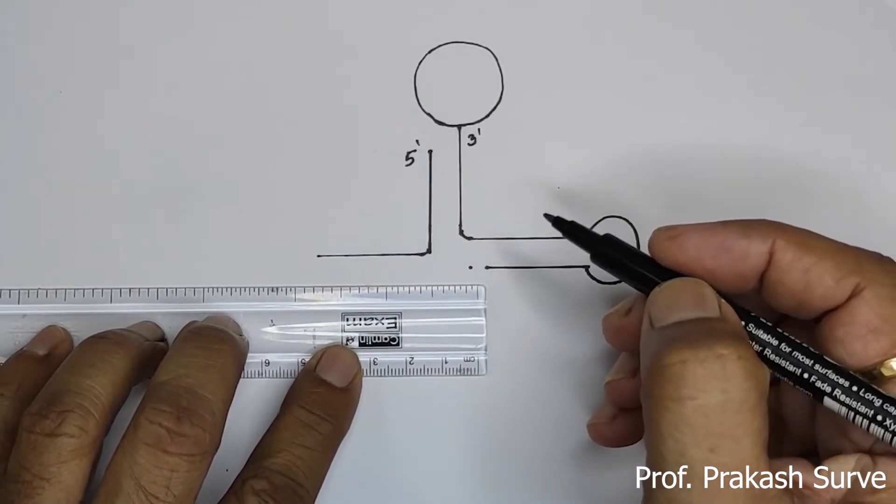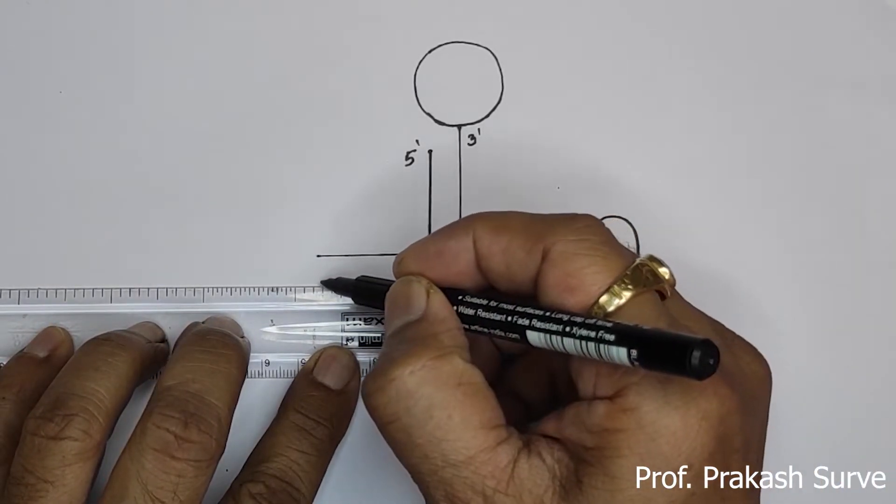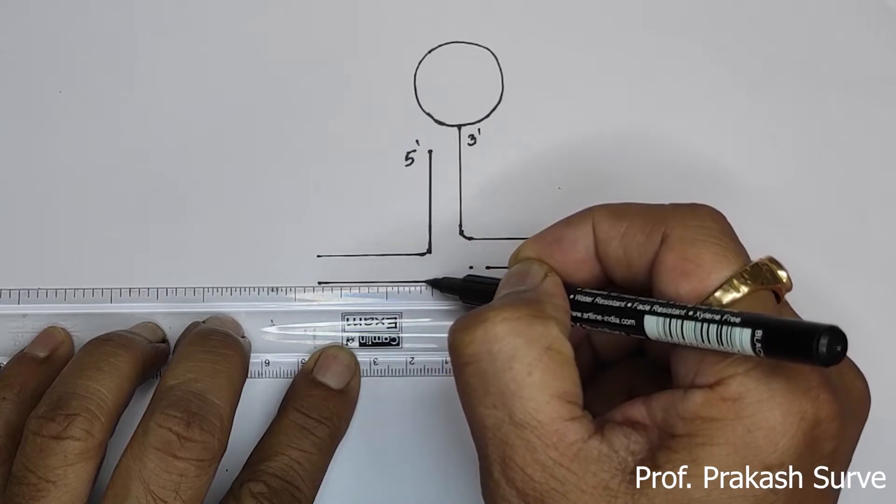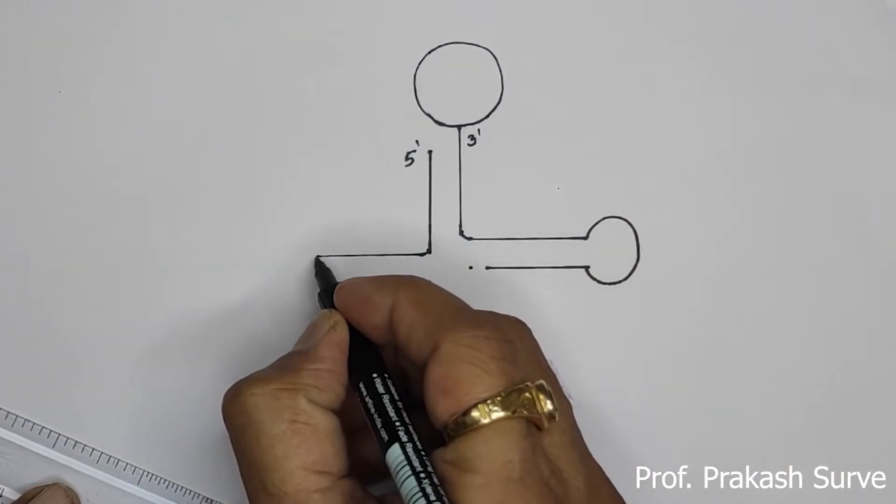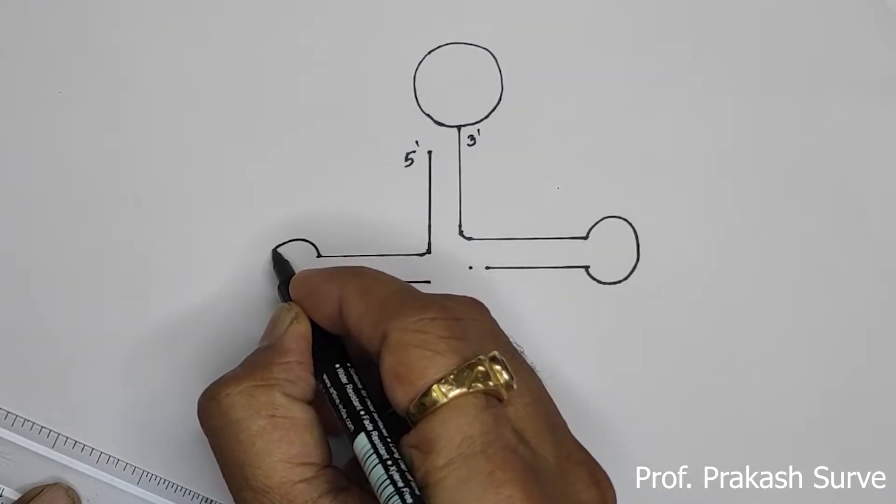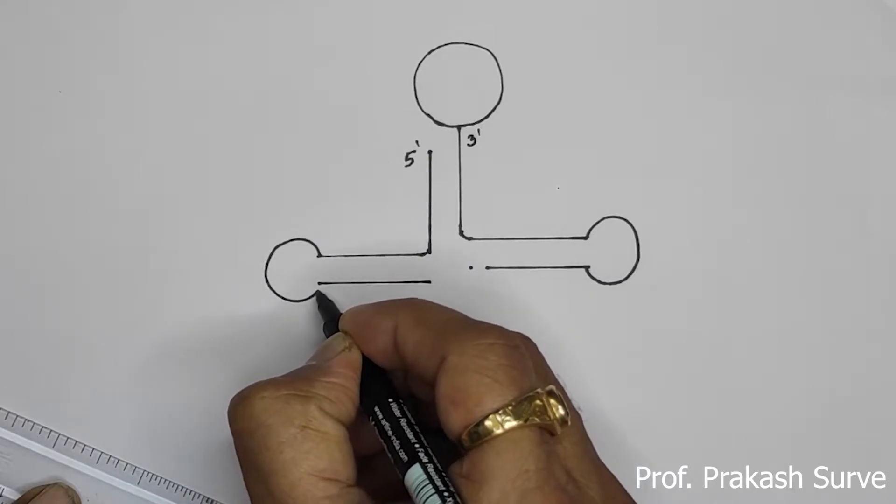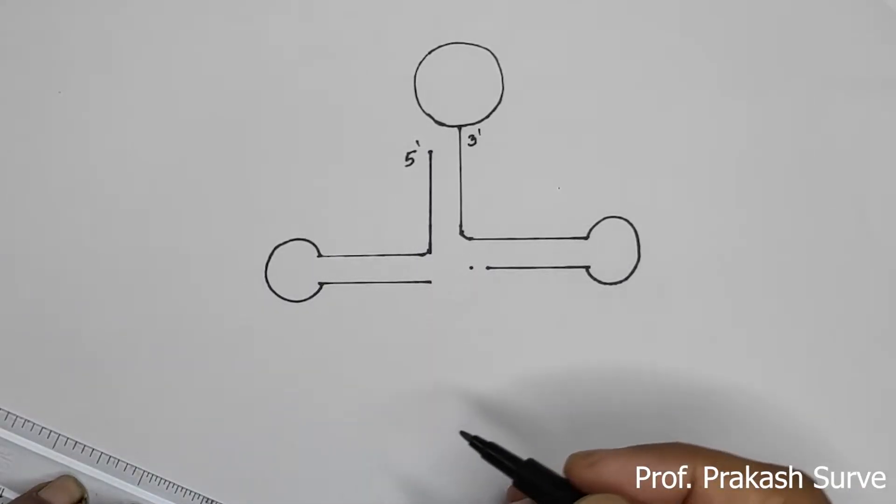Same we will join here. Draw corresponding to this. And here also we will make the circle like the previous one. So this will be a D-loop.